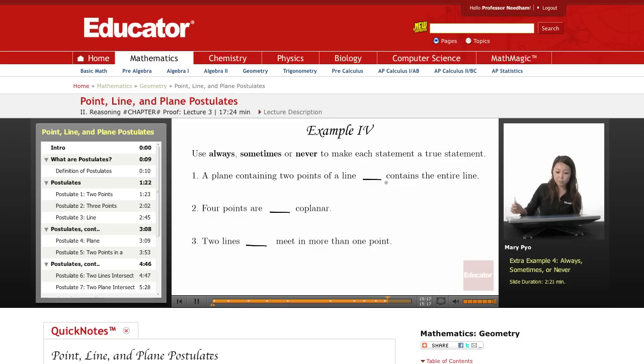A plane containing two points of a line contains the entire line. This is always. As long as the two points are in that plane, the line has to also be in that plane.